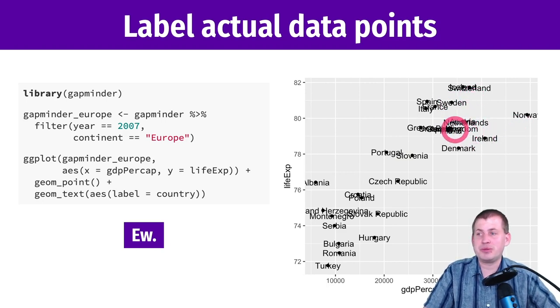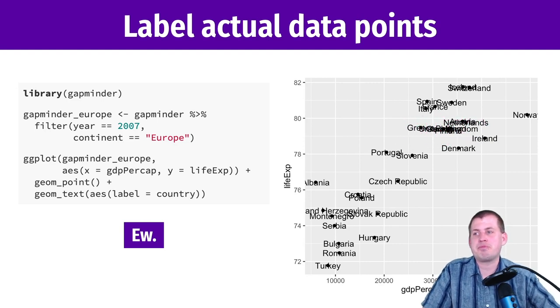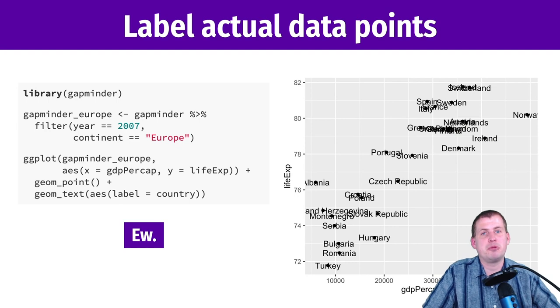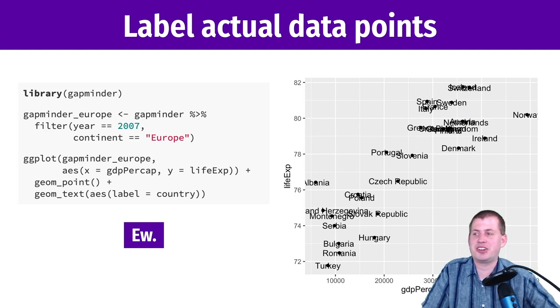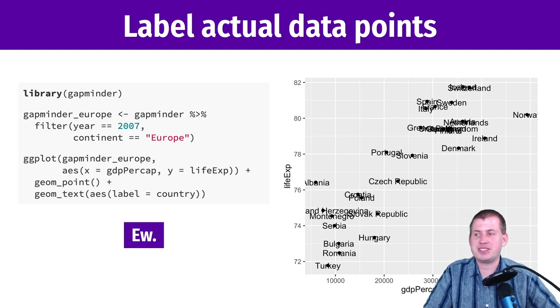We can see that one point is Denmark, that's Ireland, Portugal, Slovenia. It's helpful knowing that's Ireland, but once we get into the denser area it's like 'I have no idea what countries are there' — everything's crashing together. So geom_text is not great when you have lots of data points.